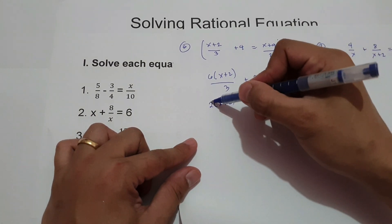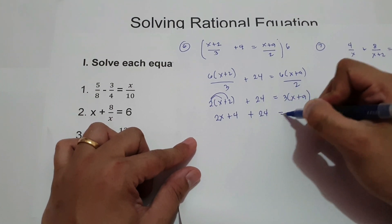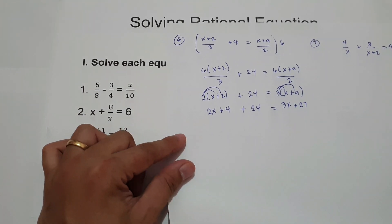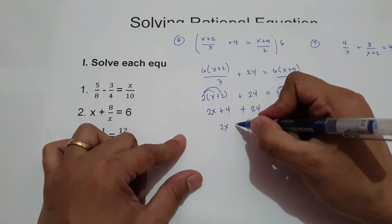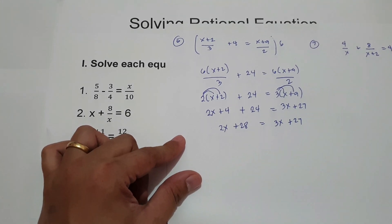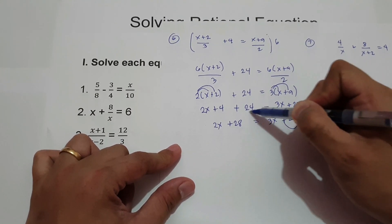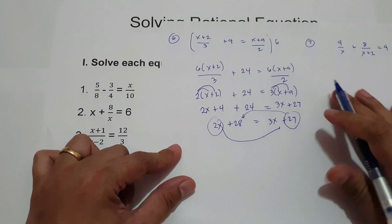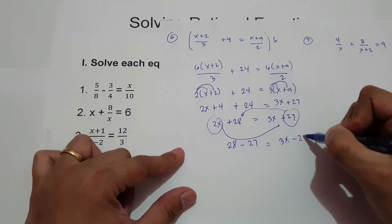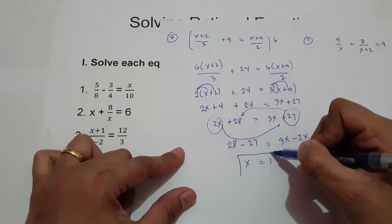Simplifying: 2 multiplied by x is 2x, 2 times 2 is 4, plus 24 equals 3 times x is 3x, and 3 times 9 is 27. So 2x plus 28 equals 3x plus 27. Combining like terms, move 27 to the side of 28 and 2x to the side of 3x. Therefore, 28 minus 27 equals 3x minus 2x. The value of x is 1.